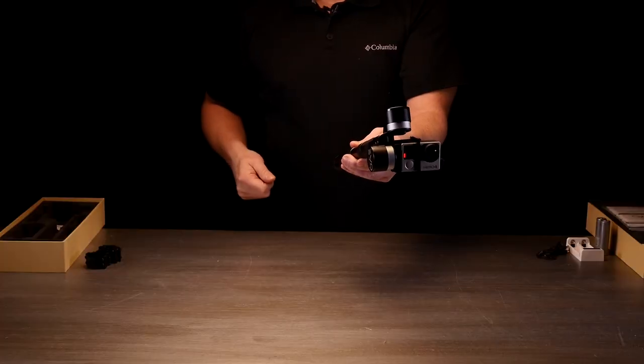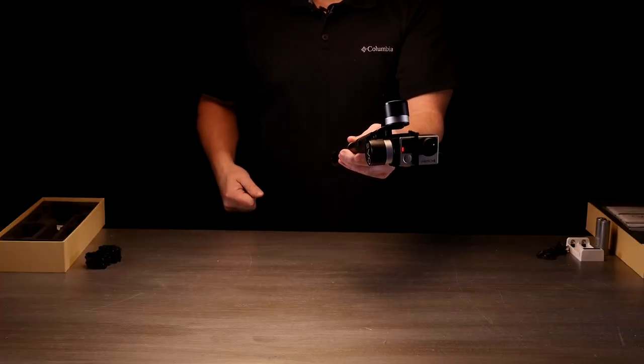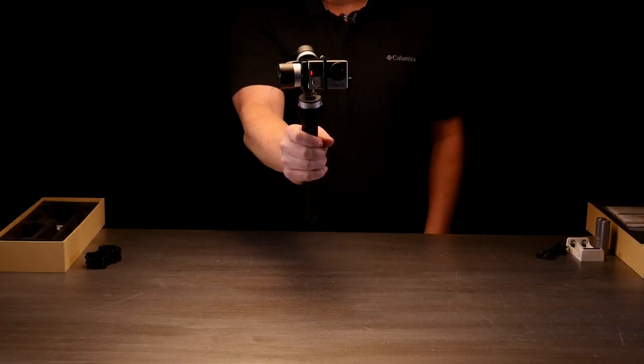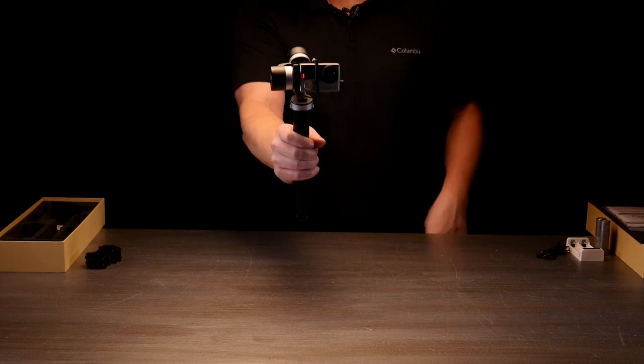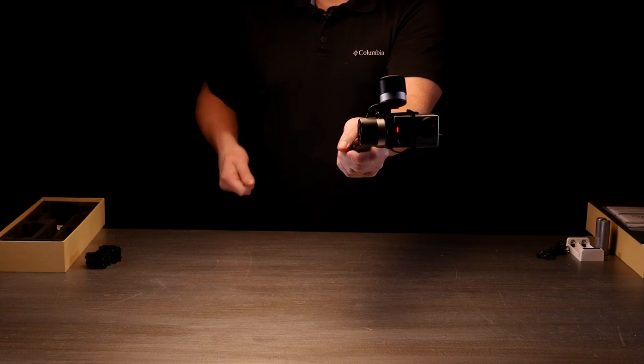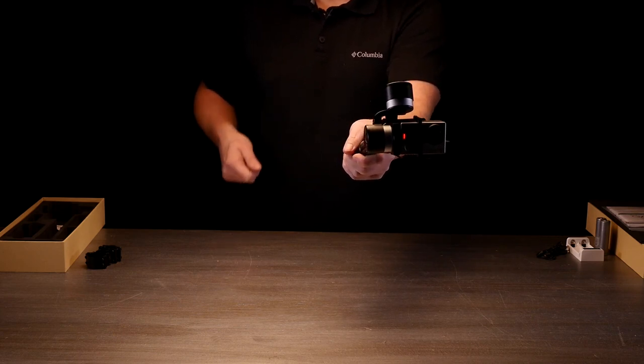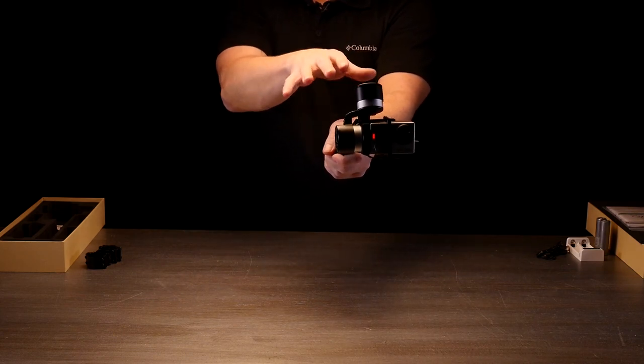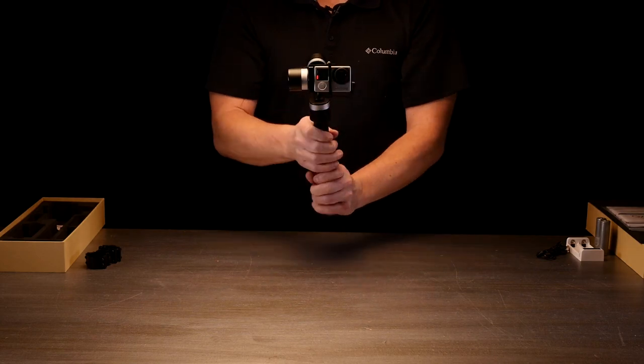It also helps to kind of smooth out your shot. If you're walking with it and you're holding it back here, it takes out a lot of the movement that you get from walking like this. If you have a handle on it, it's almost like a shock absorber. So even if your hand is moving and you're walking, it holds the camera a lot steadier when you do have that.